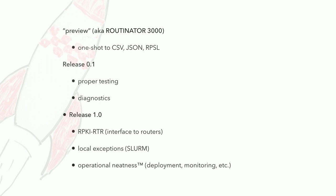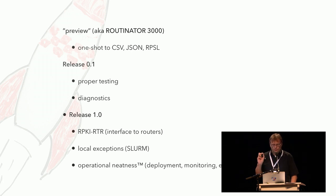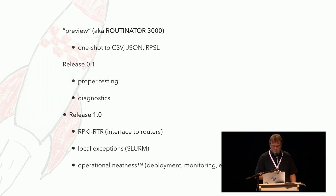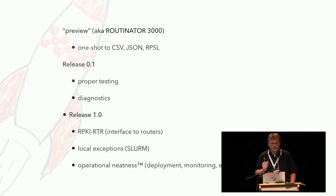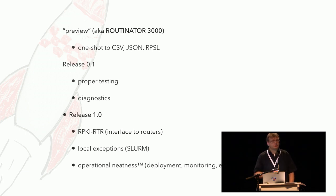Then, of course, the big thing is going to be a 1.0. The roadmap for that mostly revolves around RPKI RTR, so the thing where your routers can talk to it directly — you don't have to use scripting to get the data into the routers. That also means we need to implement local exceptions, which are the whitelists we heard about earlier today. For some reason that's called Slurm — I'm still not sure if that's a Futurama reference or not. And obviously we want to make it nicer to run: better deployment, packaging, monitoring, and integration into the usual monitoring systems.